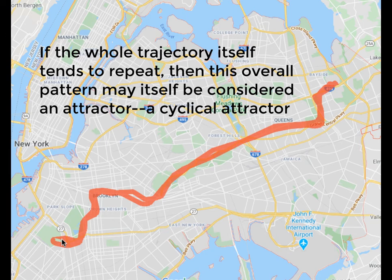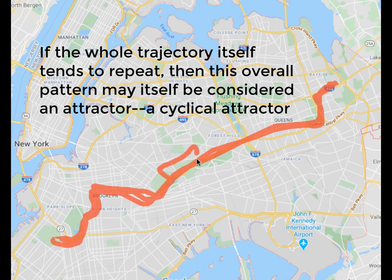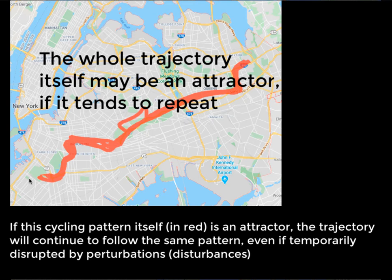We can see that it's an attractor because not only did I follow it on one occasion, but on other occasions I tend to follow the same attractor. Now, say maybe there's construction right here, so I have to go on a detour. But after the detour I will return to the original trajectory, and then the next day, or whenever the construction is finished, I will return to the original trajectory. So in that sense, that pattern itself through space is an attractor.